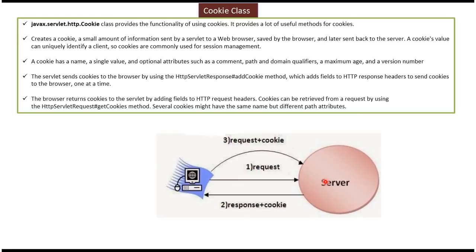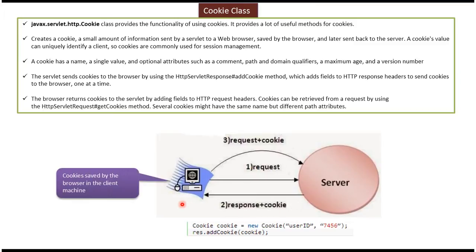So what the server will do is it will create the cookie like this: Cookie cookie = new Cookie("userId", "7456"). Once this cookie object is created, that cookie can be added to the response object. That response will be sent to the client. The client browser will then save the cookie on the local client machine. Whenever this client sends a request to the server, that particular cookie will be attached to the request. Once the server receives the request, the server can get the cookie from the request.